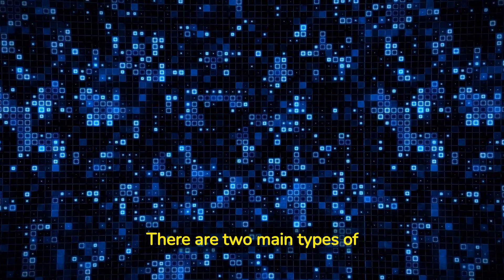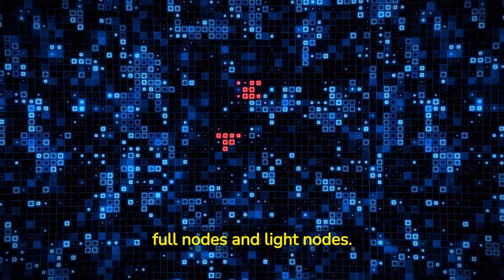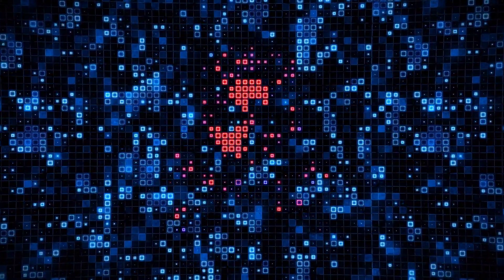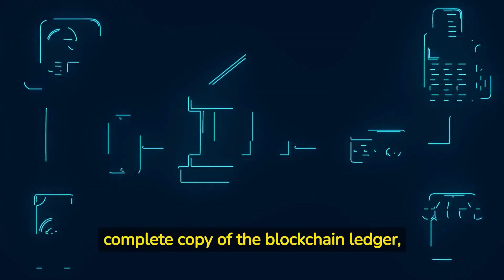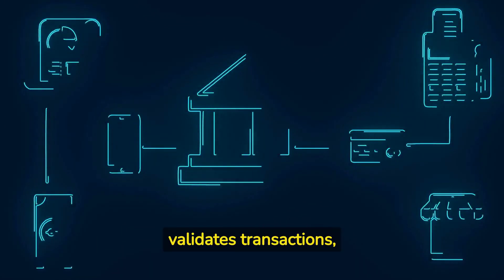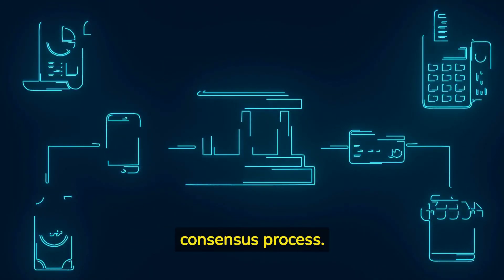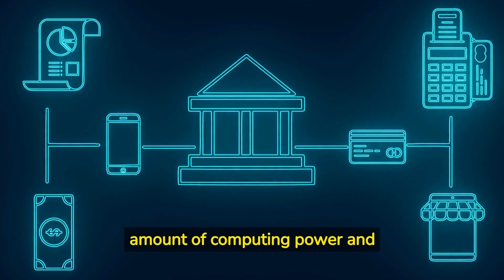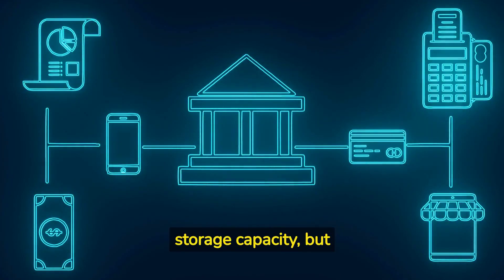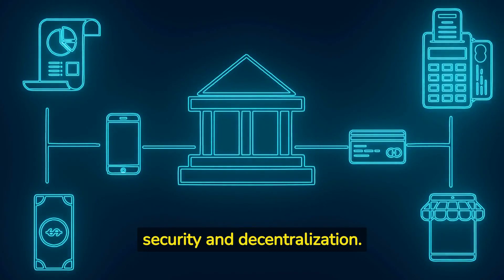There are two main types of nodes in a blockchain network: full nodes and light nodes. A full node stores a complete copy of the blockchain ledger, validates transactions, and participates in the consensus process. This requires a significant amount of computing power and storage capacity, but provides the highest level of security and decentralization.